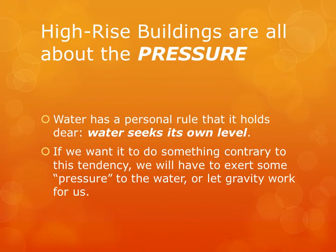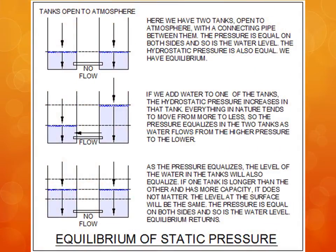High-rise buildings are all about the pressure. Water has a rule it holds dear: water seeks its own level. If we want to do something contrary to this, we have to exert some pressure or let gravity work for us. Here's an example of equilibrium of static pressure — notice that the tanks are open to the atmosphere with a pipe between them. At the top, the two tanks are at the same level, and there is no flow in the pipe connecting them.